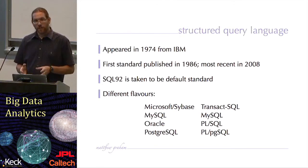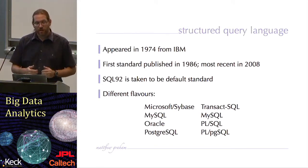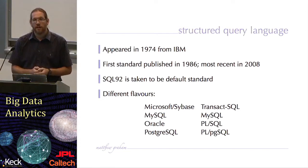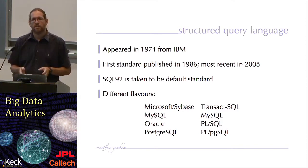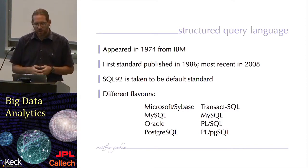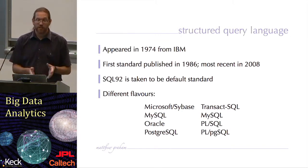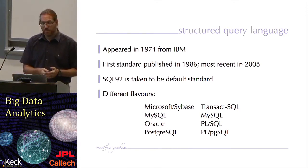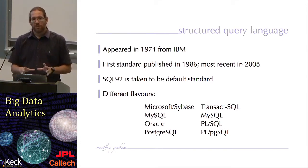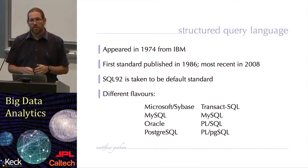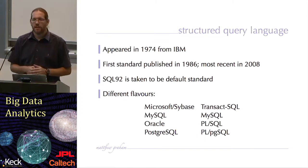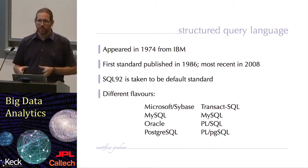SQL 92 is taken to be the default standard. There are different flavors of SQL, even though they are all supposed to be attached to a standard, and those will vary from the different types of relational database management system that you are actually using. So Microsoft and Sybase use a flavor called Transact SQL. MySQL uses MySQL. Oracle uses PLSQL. And Postgres uses PGSQL. The core syntax is the same, but the differences are ones of minor syntax or maybe additional functionality over that default core standard.